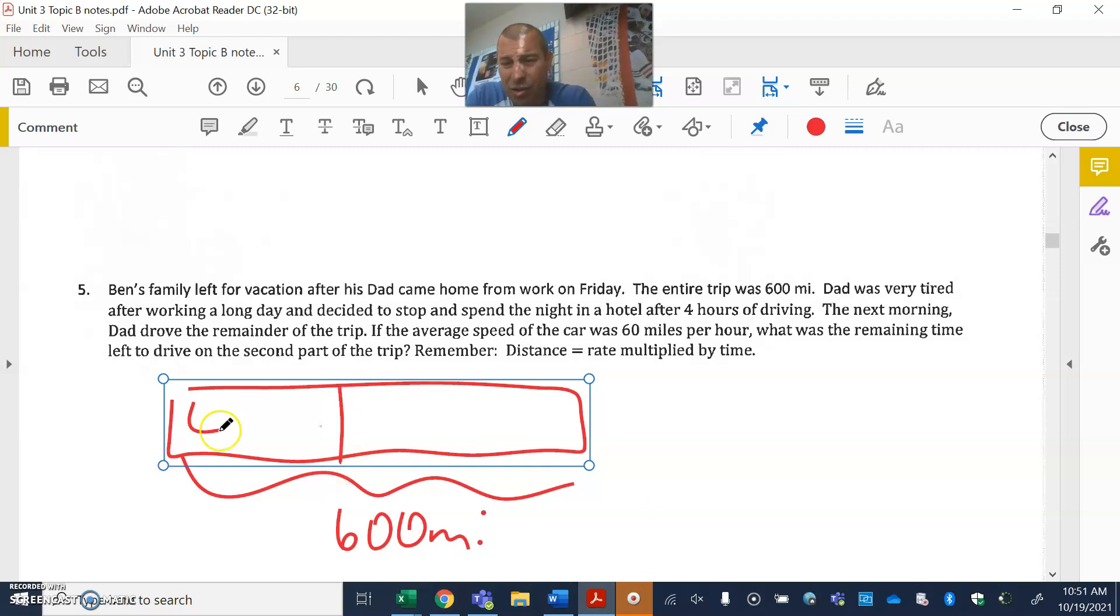The entire trip was 600 miles. Dad was very tired after four hours of driving. The average speed of the car was 60 miles per hour. So 60 times the x will get me the number of miles that are there. If it was five hours, it would be 60 times 5. If it was seven, it would be 60 times 7 for the hours.